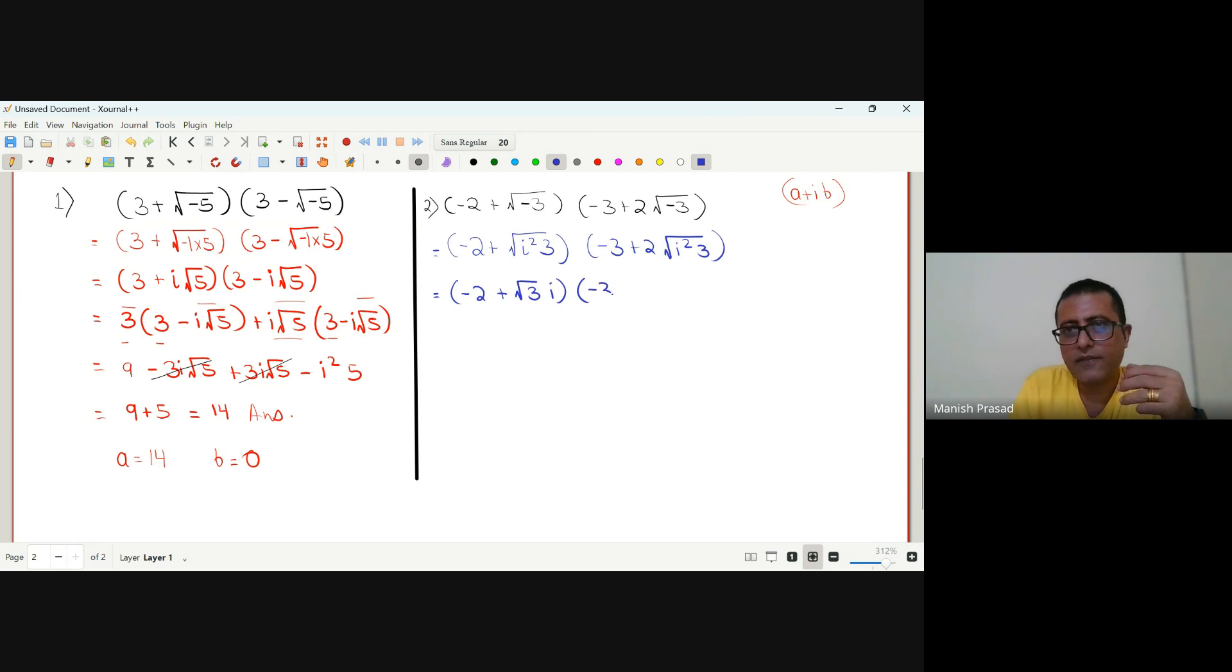and then negative 3 plus 2 root 3 i. Now we go back to junior classes: negative 2 into negative 3 plus 2 root 3 i, and we have the next one root 3 i.